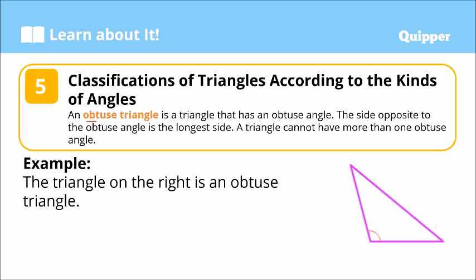An obtuse triangle has an obtuse angle — isang obtuse angle. Take note that the side opposite to the obtuse angle is the longest side.